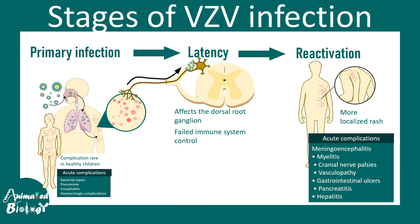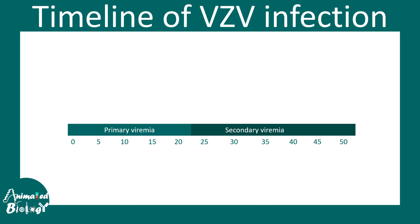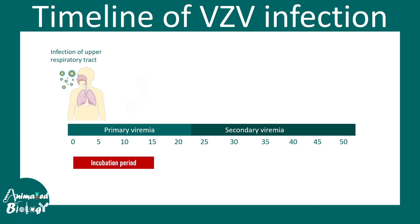Shingles can sometimes be associated with complications like myelitis, cranial nerve palsies, vasculopathies, pancreatitis, and hepatitis, though not common in every patient. The overall timeline involves an incubation period, then a prodromal phase, then an itchy rash. Primary viremia occurs during incubation, then the virus affects the liver and spleen before the contagious period with fever and rash.